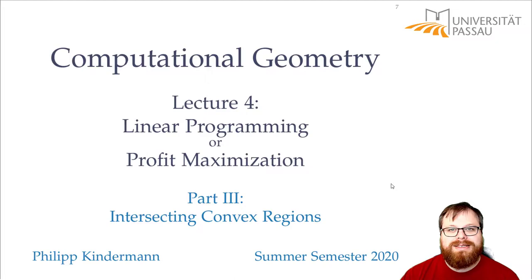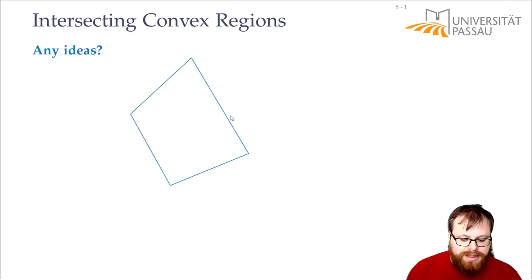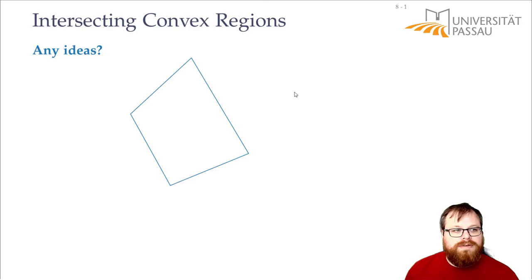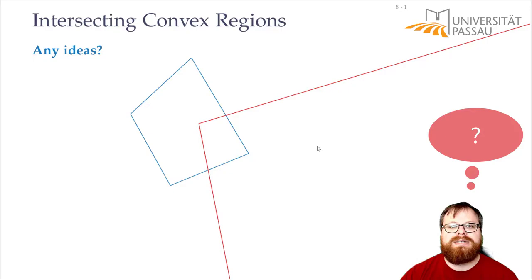In this part we want to figure out how to intersect two convex regions. We can have two polygons, or one or both of them can be a convex region defined by half-planes. Now we have two of them — how can we intersect them?